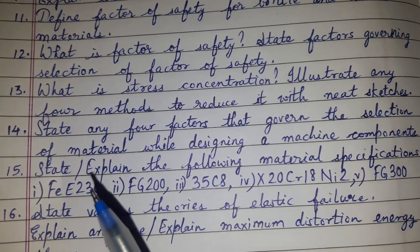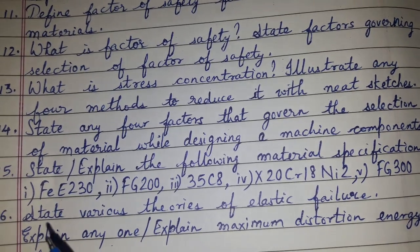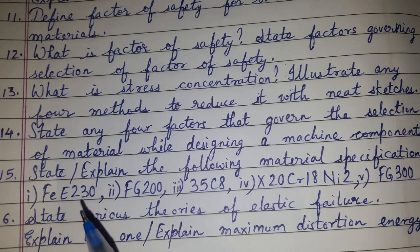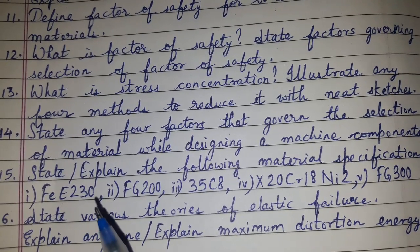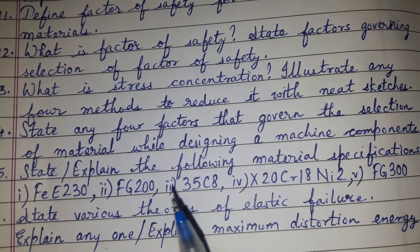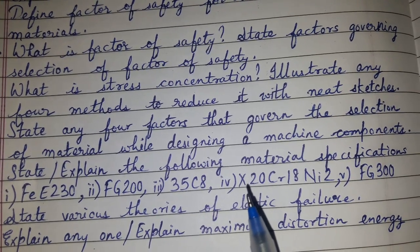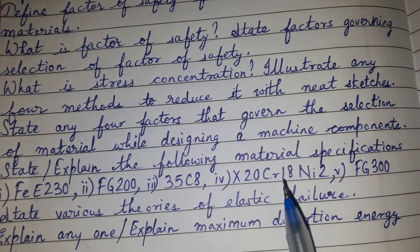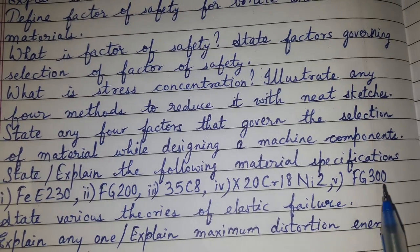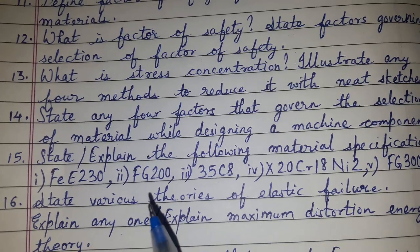Question number fifteen: state or explain the following material specifications — Fe E 230, FG 200, FG 300, 35C8, X20Cr18, and I2 FG 300.